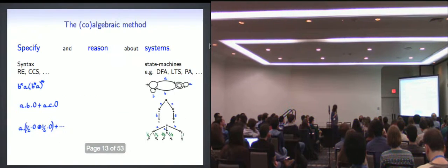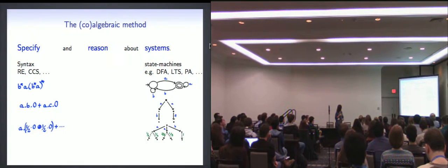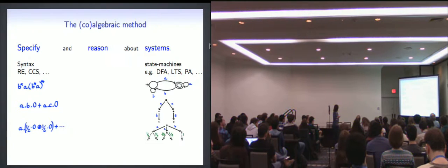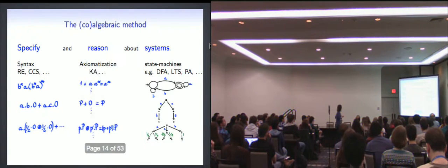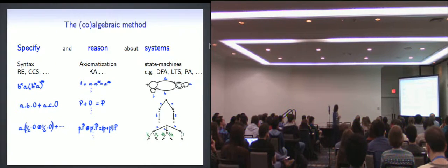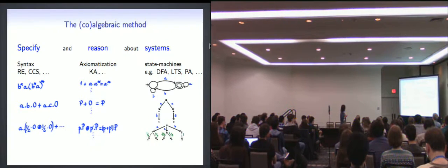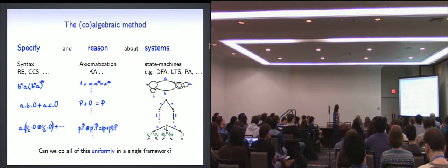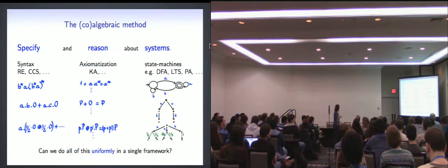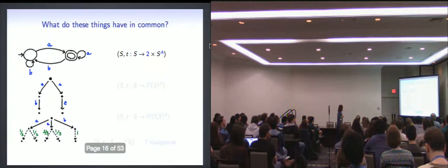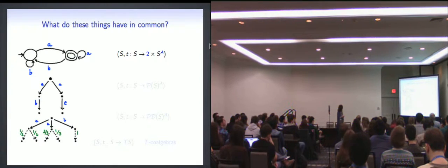So here's the co-algebraic method in one slide. If you want to specify and reason about systems, and when I think systems, I really think automata or label transition systems or probabilistic automata, then one way to specify the behaviors of such systems is to take a syntax like regular expressions or process calculi. And maybe you want to reason about them using some axioms. And if you put everything in one slide, you might wonder, what is common among these languages? I mean, how did this language came to exist? Or where do these axioms come from, really? And, you know, people doing co-algebra would ask, can we do this all at once? So is there a way to actually derive axioms and languages and analyze all these systems in one single framework?